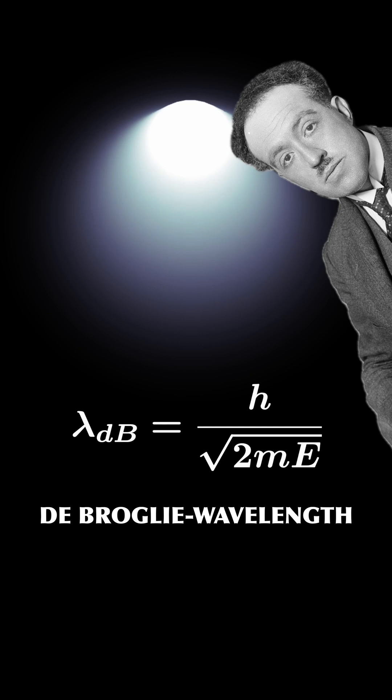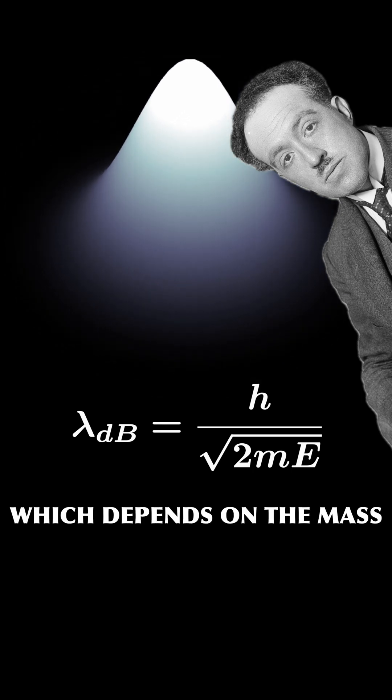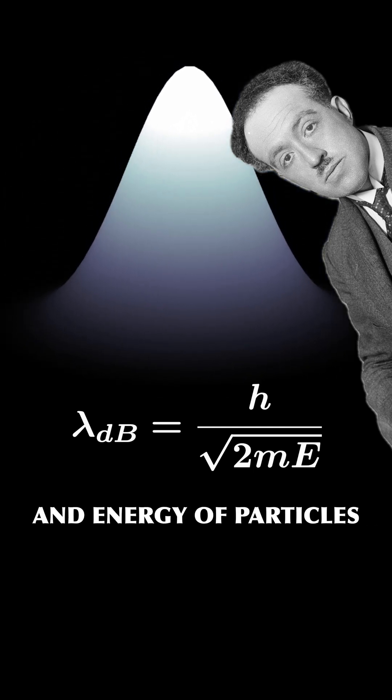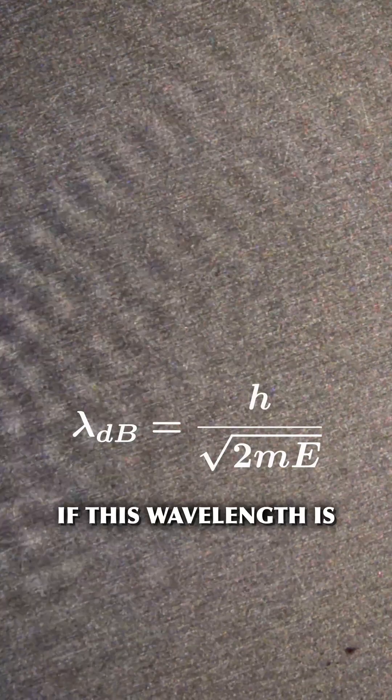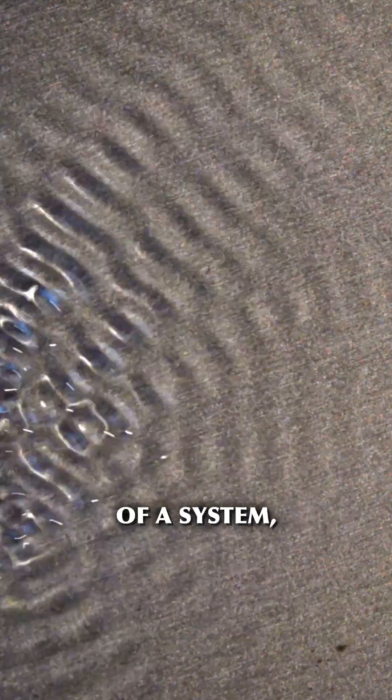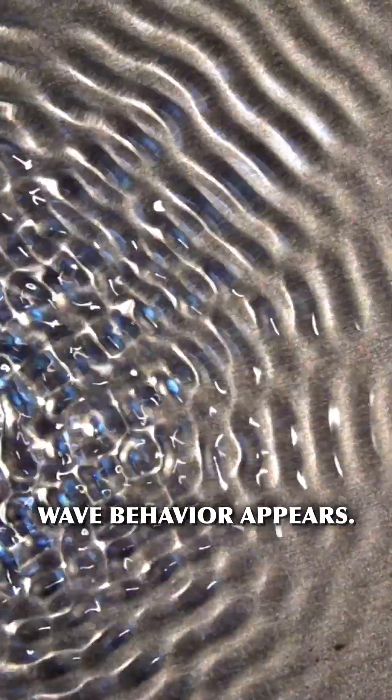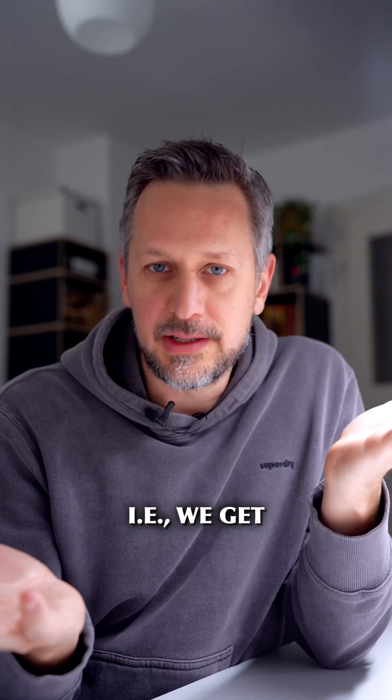First, we have the de Broglie wavelength, which depends on the mass and energy of particles. This is the rough size of the matter wave of the particle. If this wavelength is comparable to the relevant distances of a system, wave behavior appears. That is, we get quantum effects.